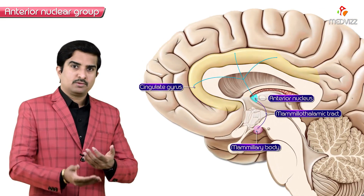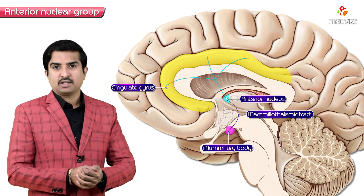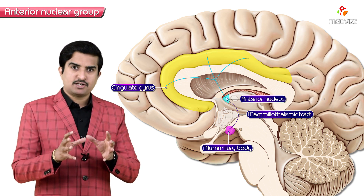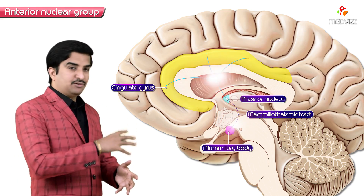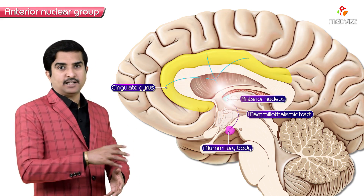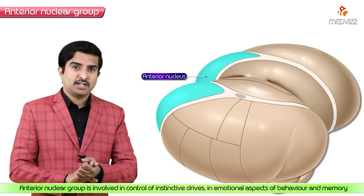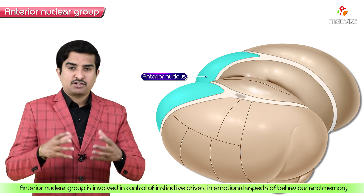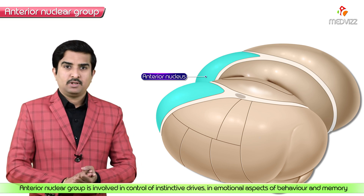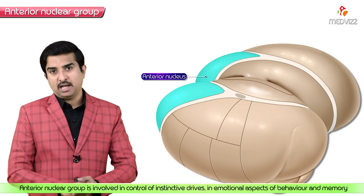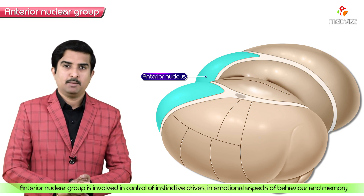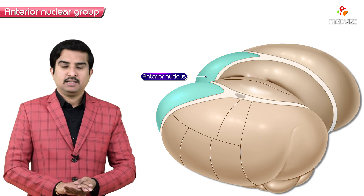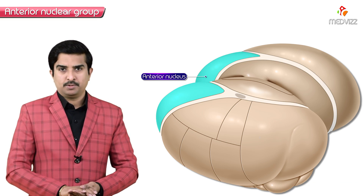Spatial memory as well as episodic memory are both important functions of the anterior nuclear group's afferent and efferent tracts. This anterior nuclear group also controls instinctive drives in the emotional aspects of behavior as well as in memory — this is what we need to know about the anterior nuclear group.